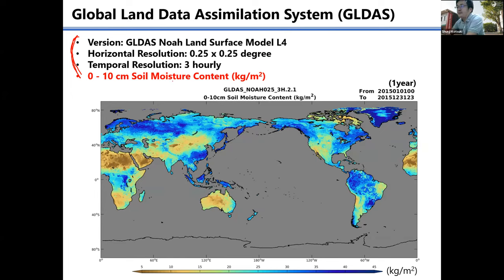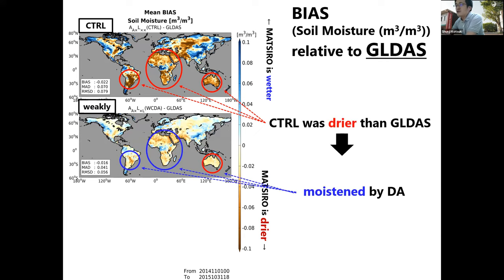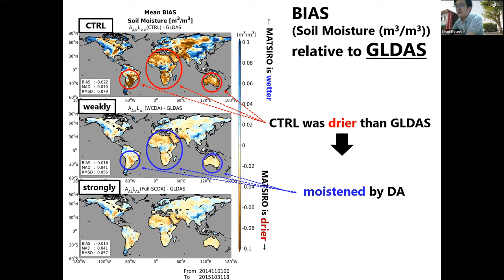This panel shows the bias against SMOS for the control experiment and the bias in soil moisture. The brown color means that our model has a drier bias originally, and the blue color means the model has a wetter bias. We can see the control experiment was drier than SMOS in brown-colored regions. Because of the assimilation of soil moisture, this bias can be mitigated successfully, meaning the data assimilation works well. By extending to strongly coupled data assimilation, we can also see the mitigated bias against SMOS, and comparing the two figures shows a clear difference between them.